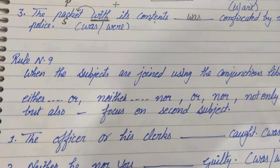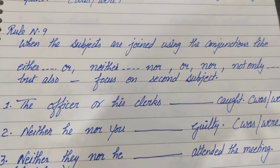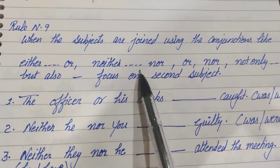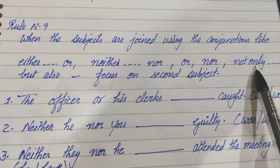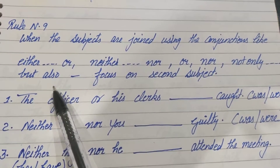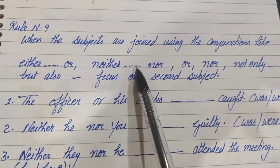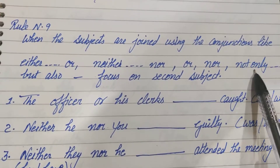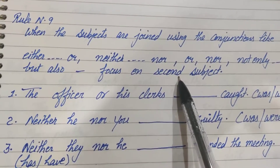Let's switch to rule number 9. When subjects are joined using conjunctions like 'either...or', 'neither...nor', 'or', 'nor', or 'not only...but also' — five pair conjunctions — then we will be focusing on the second subject. In rule 8 with 'with/along with/besides/together with' we focused on the first subject; in rule 9 we focus on the second subject.